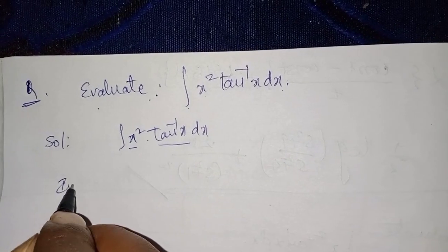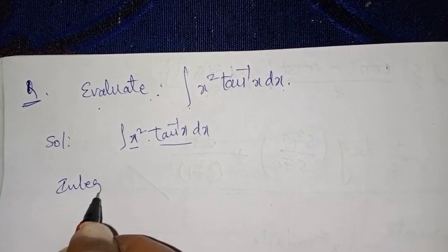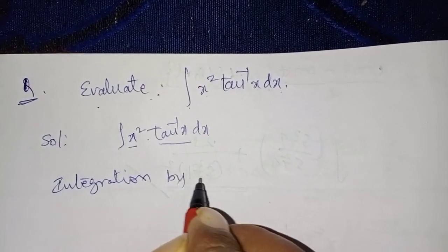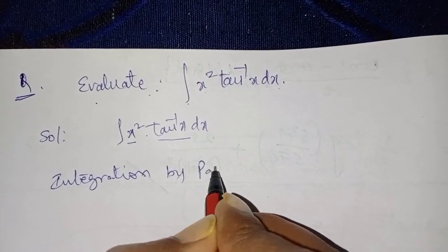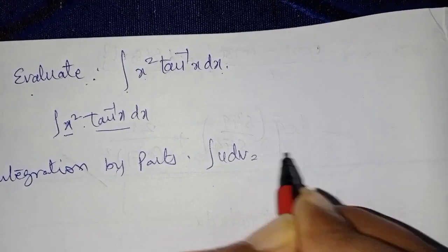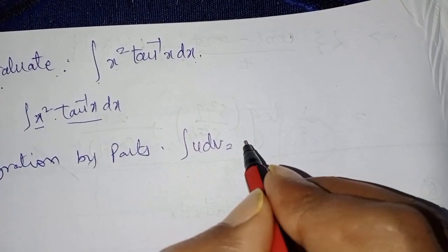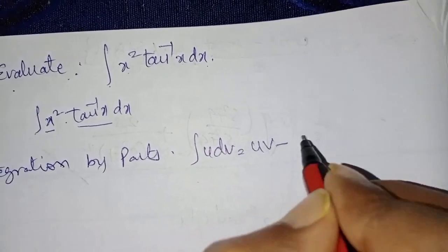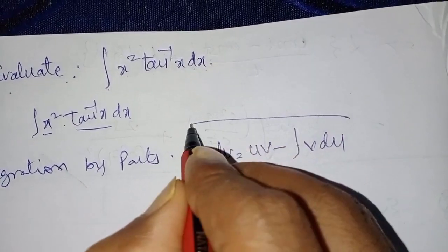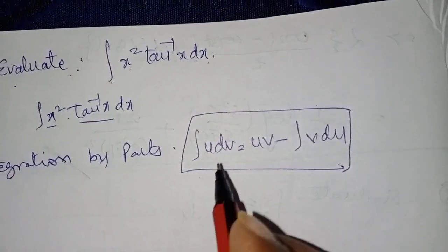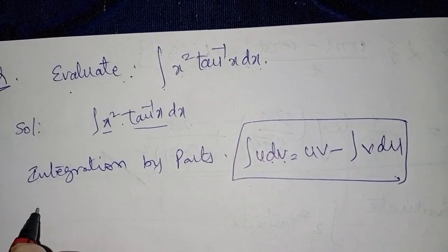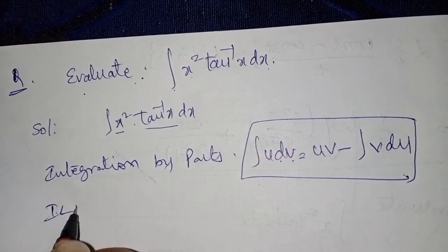The integration by parts formula is: integral of u dv is equal to u into v minus integral of v du. If you want to find the u and dv values, we need to use the ILATE rule.